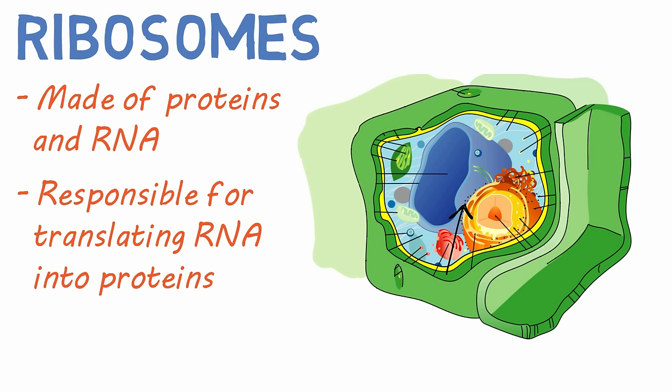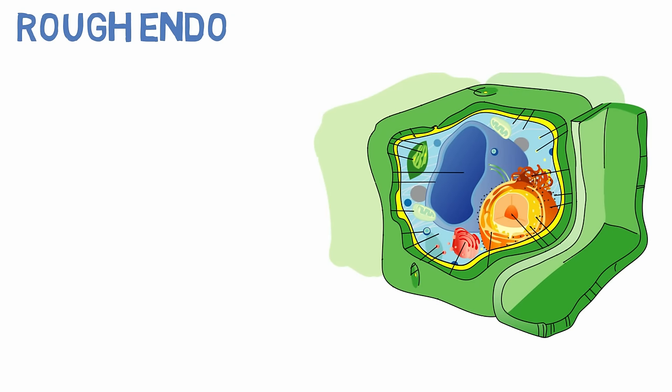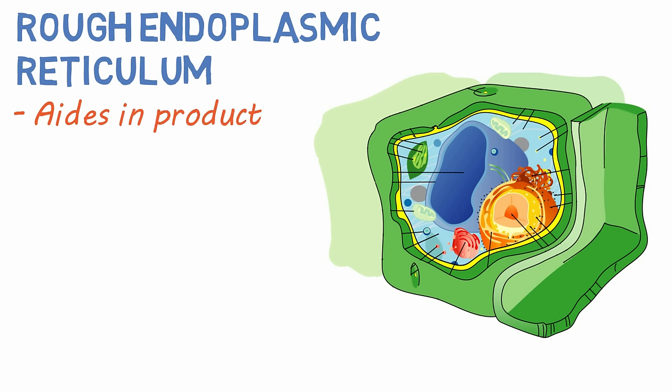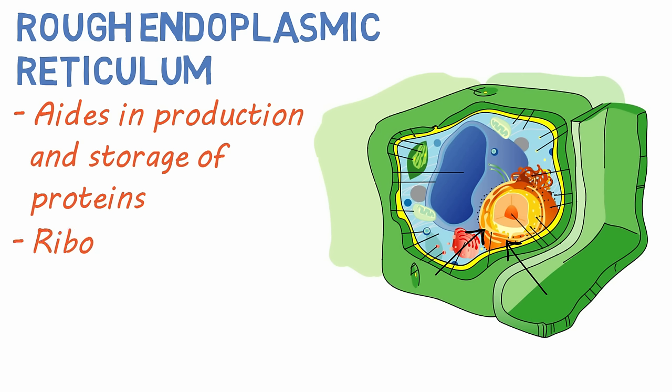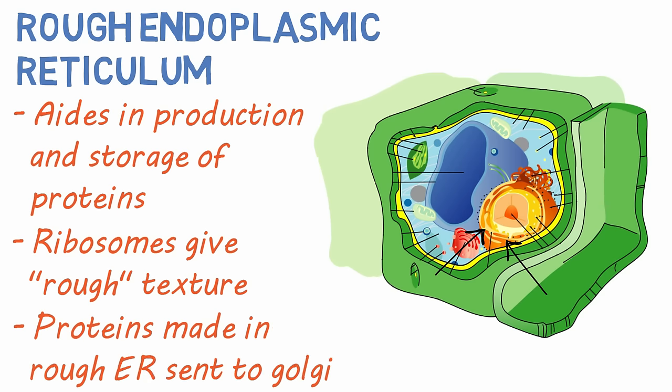And this is our next structure, and there are actually two types. Rough endoplasmic reticulum aids in the production and storage of proteins that are made on the ribosomes attached to it. It's these ribosomes that give it its rough texture and name. Proteins made in the rough ER are sent to the Golgi apparatus.